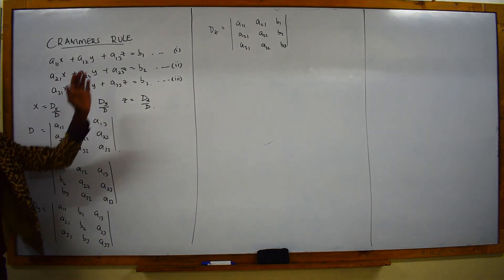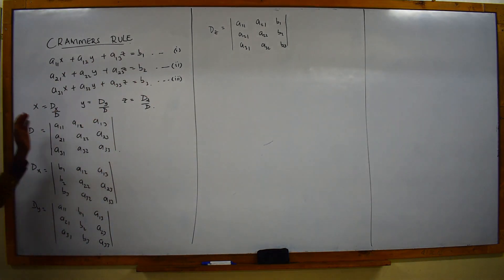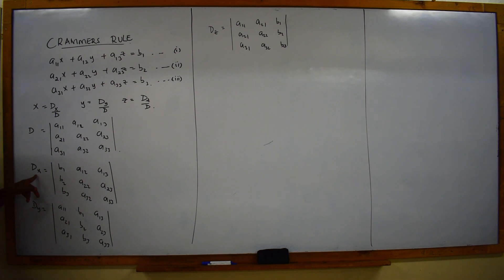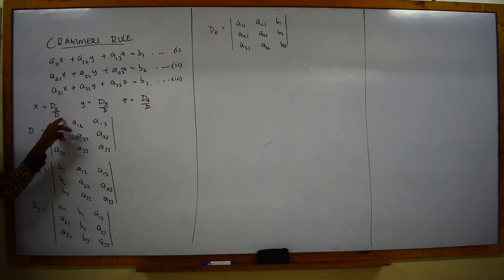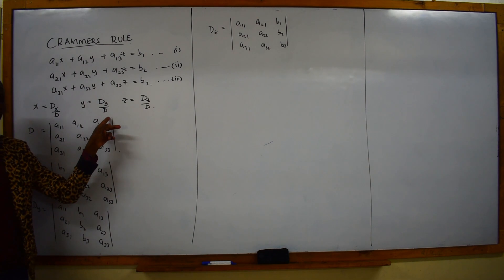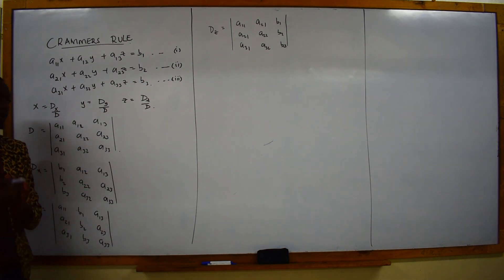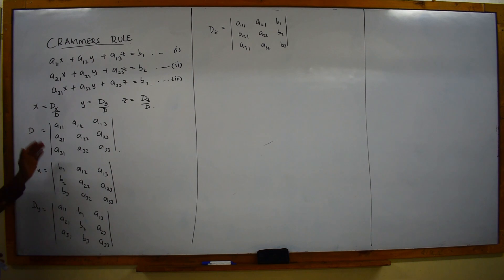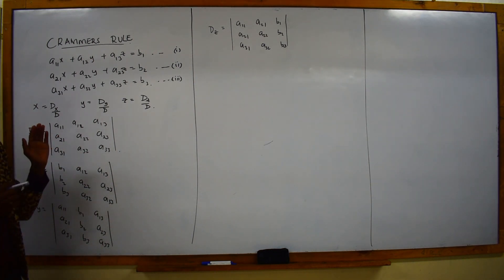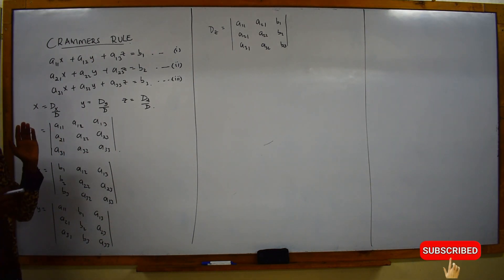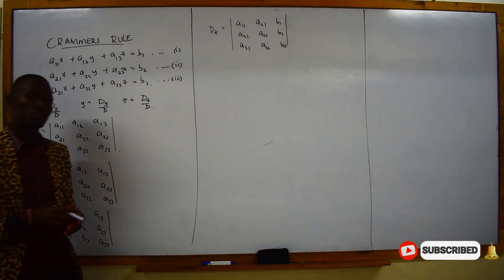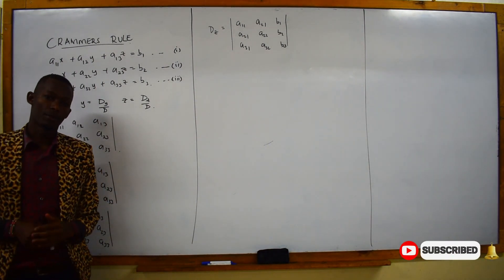After getting the values, you come and replace. So whatever you get for Dx, divide by D. Then Dy divide by D. Then Dz divide by D. So that is how you work out three unknowns using Cramer's rule.